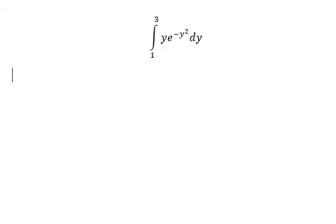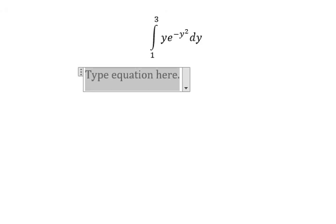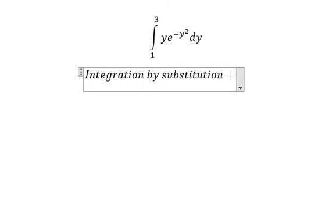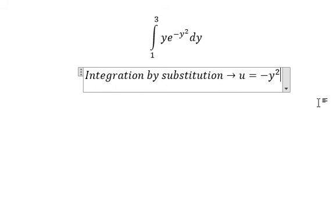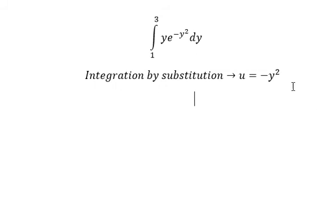In this situation you need to use integration by substitution. We will choose u equals minus y square. Then we do first derivative on both sides.